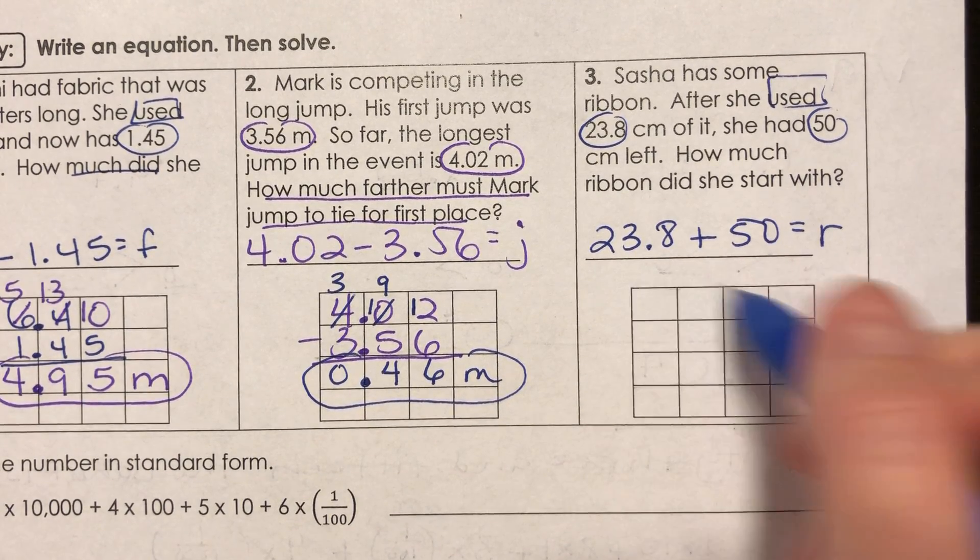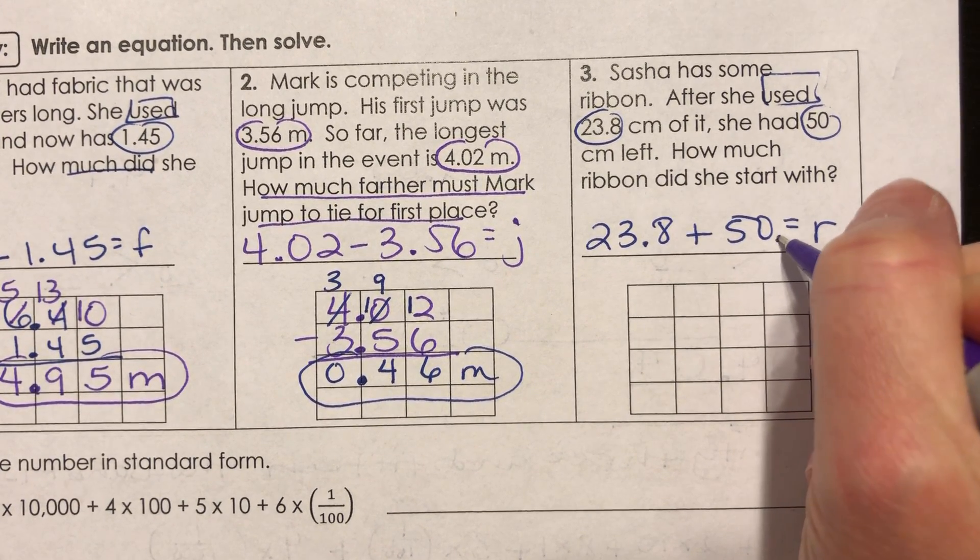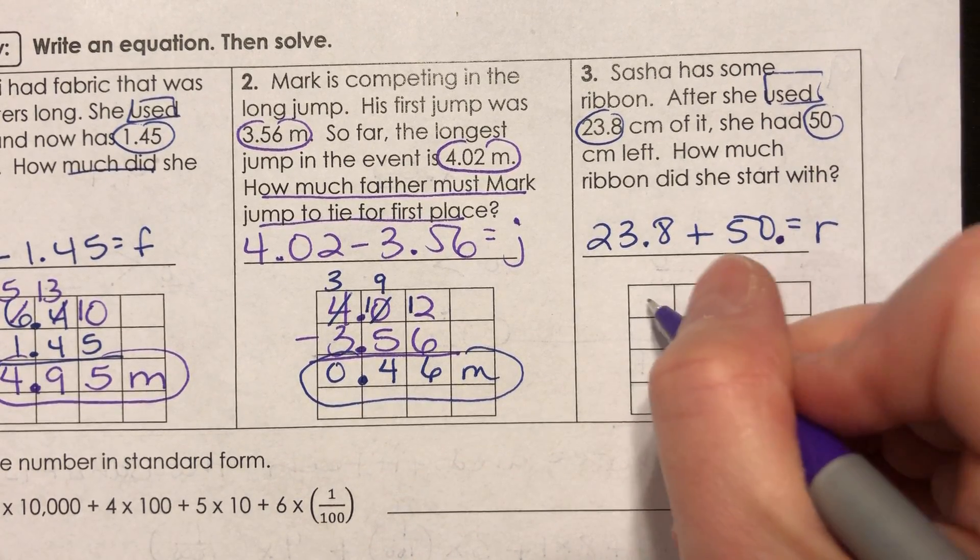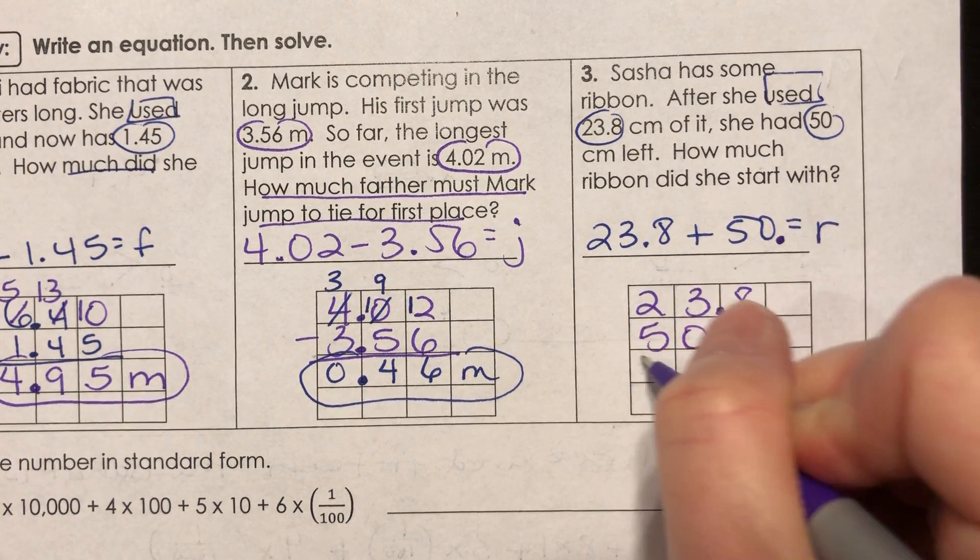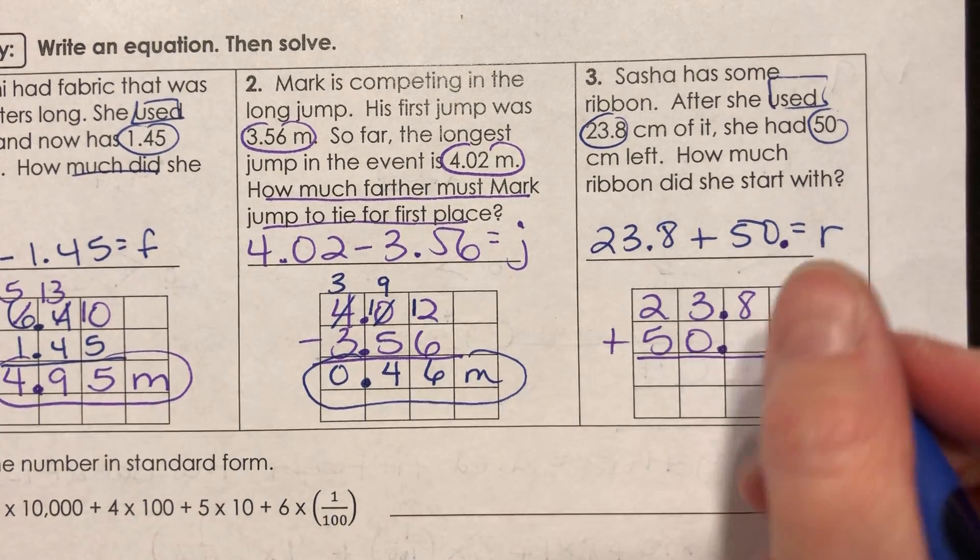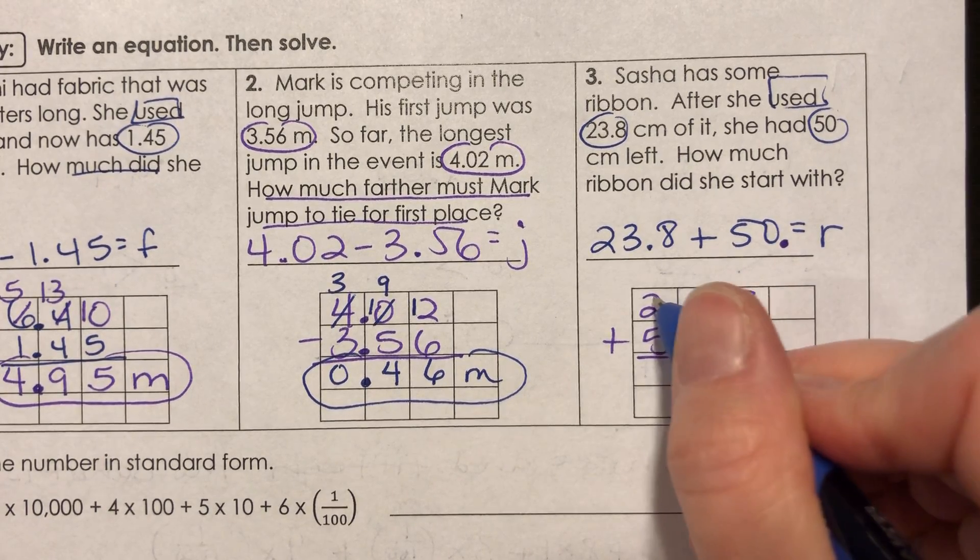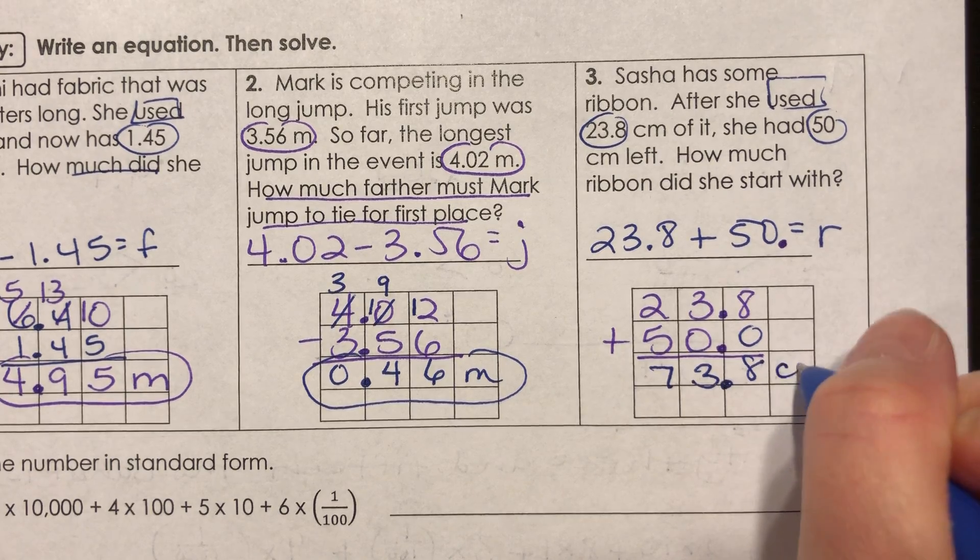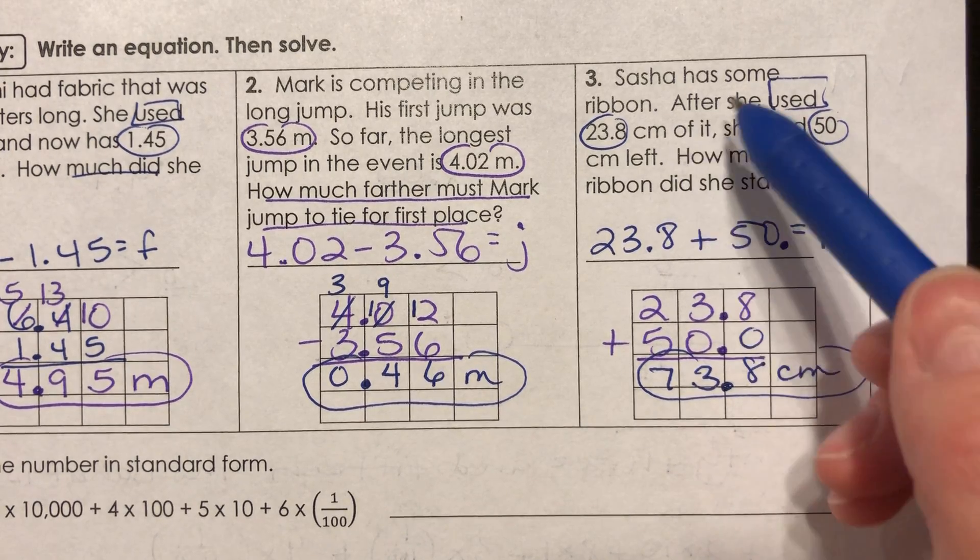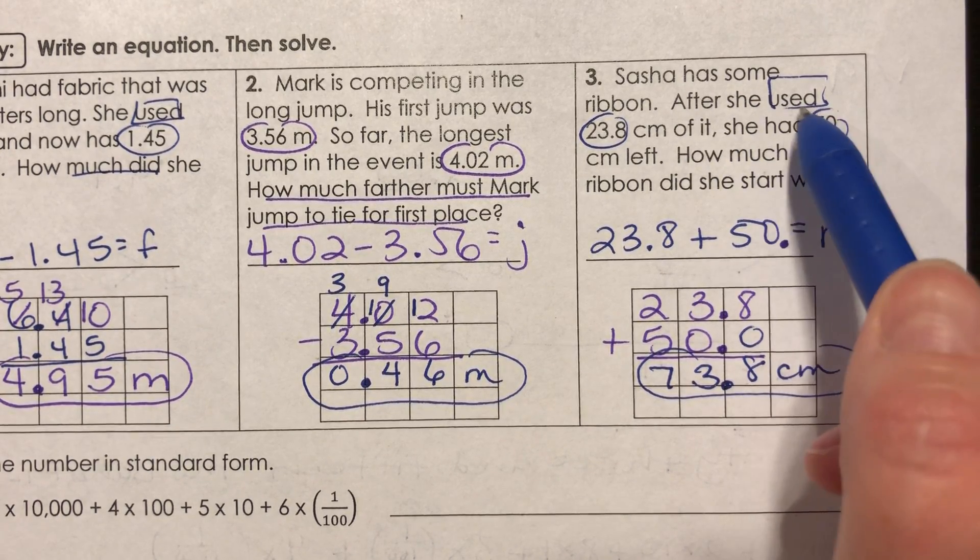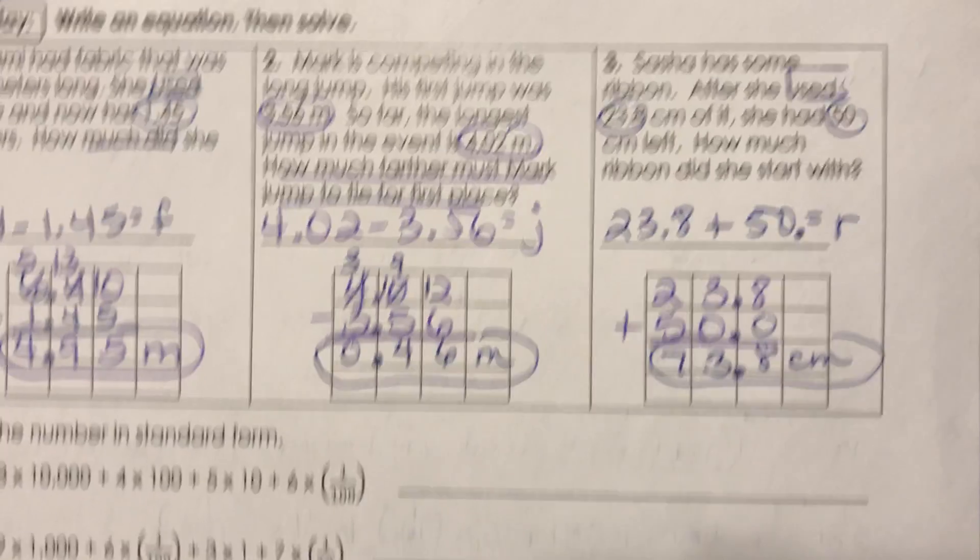Now you could put 50 plus 23.8, it's not gonna matter because of the commutative property, this is an addition problem. I'm gonna go ahead and put my decimal point right there after the 50 so I know where to put it when I'm lining it up. And now I see 23.8 up here and I'm going to write 50 lined up right there and I'm gonna go ahead and put in my zero so it doesn't look weird. Eight plus zero is eight, bring down my decimal point, three plus zero is three and two plus five is seven. So 73 and eight tenths centimeters of ribbon. That is how much she started with. And let's see if that makes sense. Like if Sasha had 73.8 centimeters and she used 23.8, wouldn't she have 50 centimeters left? Yes, I know we did the right thing.